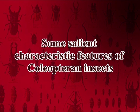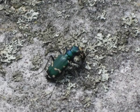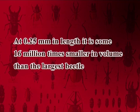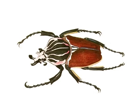Some salient features of the coleopteran insects: Coleoptera is the largest order in the animal kingdom; it includes 40 percent of all insects and nearly 30 percent of all animal species. The smallest beetle is the fringed ant beetle, Nanosella fungi, belonging to family Ptiliidae. At 0.25 mm in length, it is some 16 million times smaller in volume than the largest beetle, Goliathus giganteus, which belongs to the family Scarabidae and may have a body length of up to 10 centimeters.